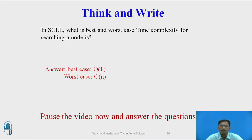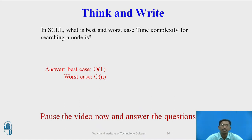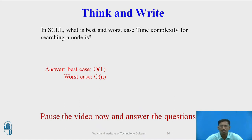The worst case is O(n), where n is the number of elements. There are two worst-case scenarios: first, if the element is not present in the singly circular linked list — you traverse the complete list before concluding it's absent. Second, if the element is present at the last node — you again traverse the entire list.